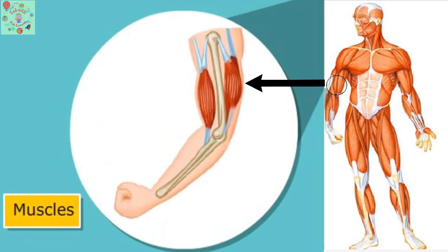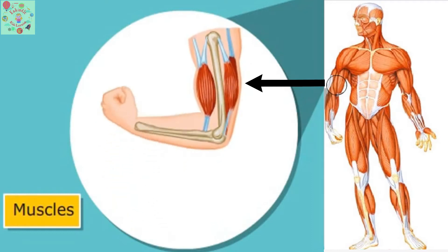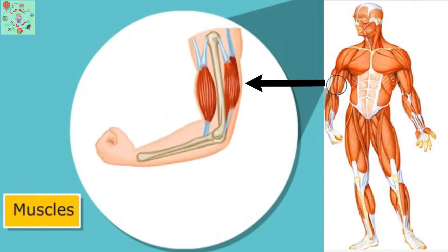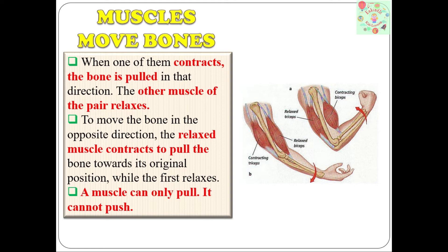Two muscles move together to move a bone. When one of them contracts, the bone is pulled in that direction. The other muscle of the pair relaxes. To move the bone in the opposite direction, the relaxed muscle contracts to pull the bone towards its original position, while the first muscle relaxes.